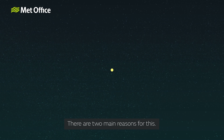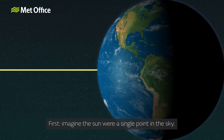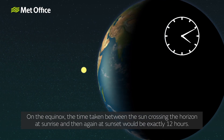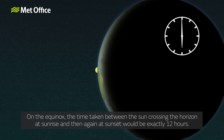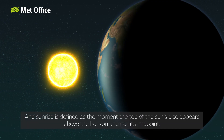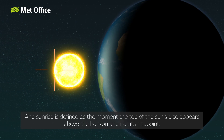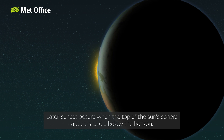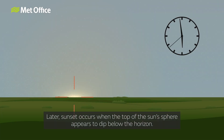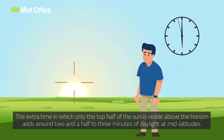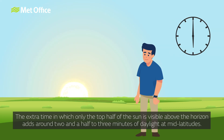There are two main reasons for this. First, imagine the Sun were a single point in the sky — on the equinox, the time between the Sun crossing the horizon at sunrise and then again at sunset would be exactly 12 hours. However, the Sun doesn't appear as a single point but as a large disk. Sunrise is defined as the moment the top of the Sun's disk appears above the horizon, and sunset occurs when the top of the Sun's disk dips below the horizon. This extra time adds around two and a half to three minutes of daylight at mid-latitudes.